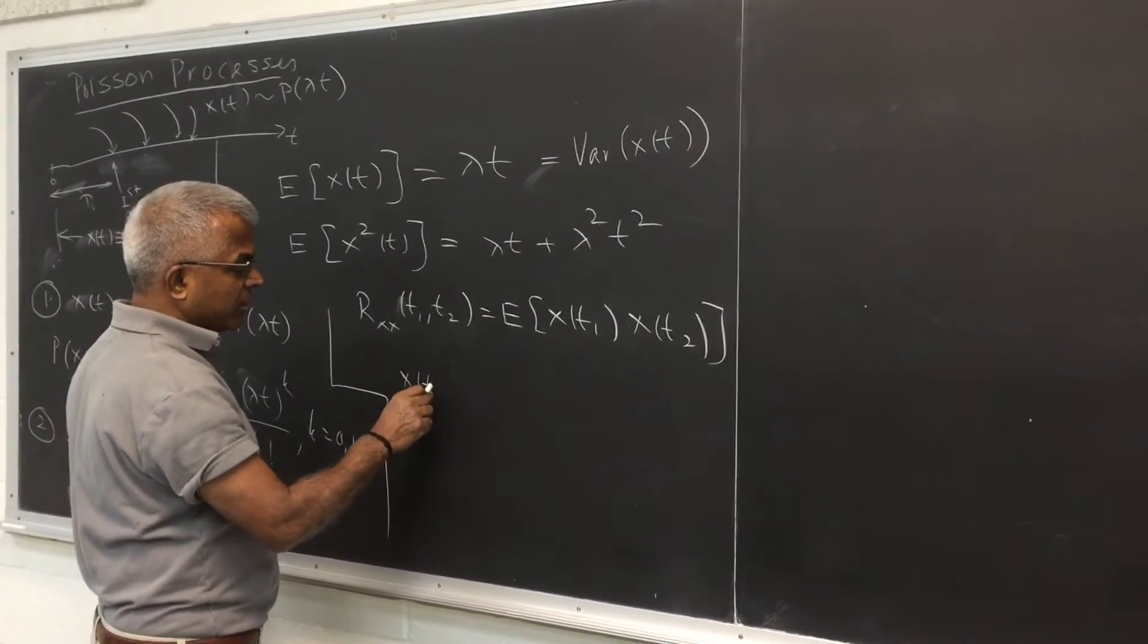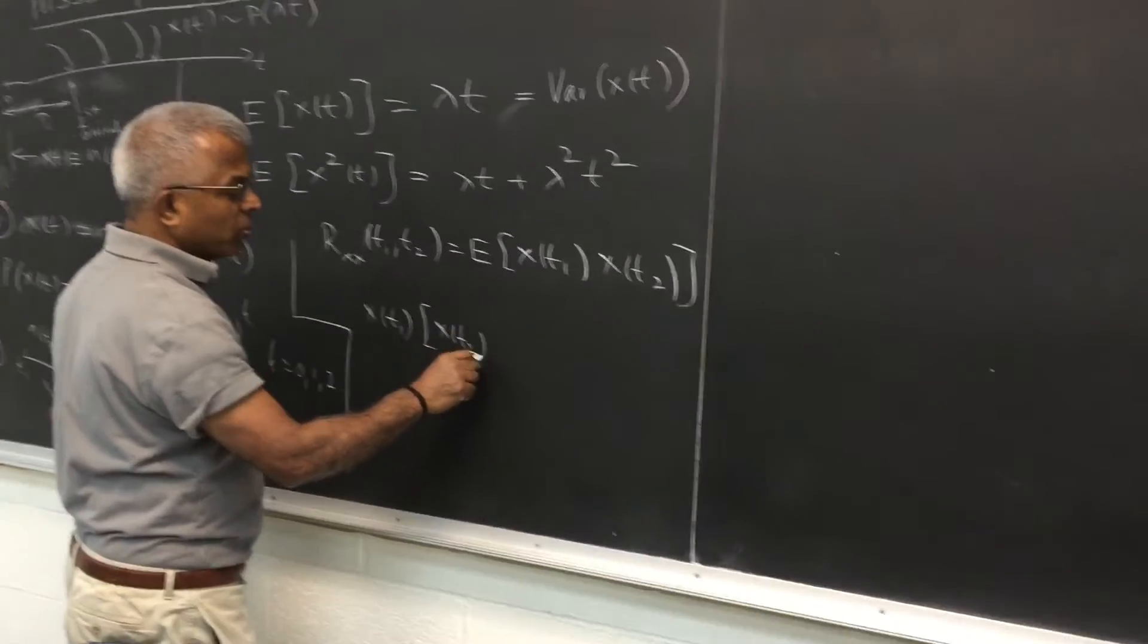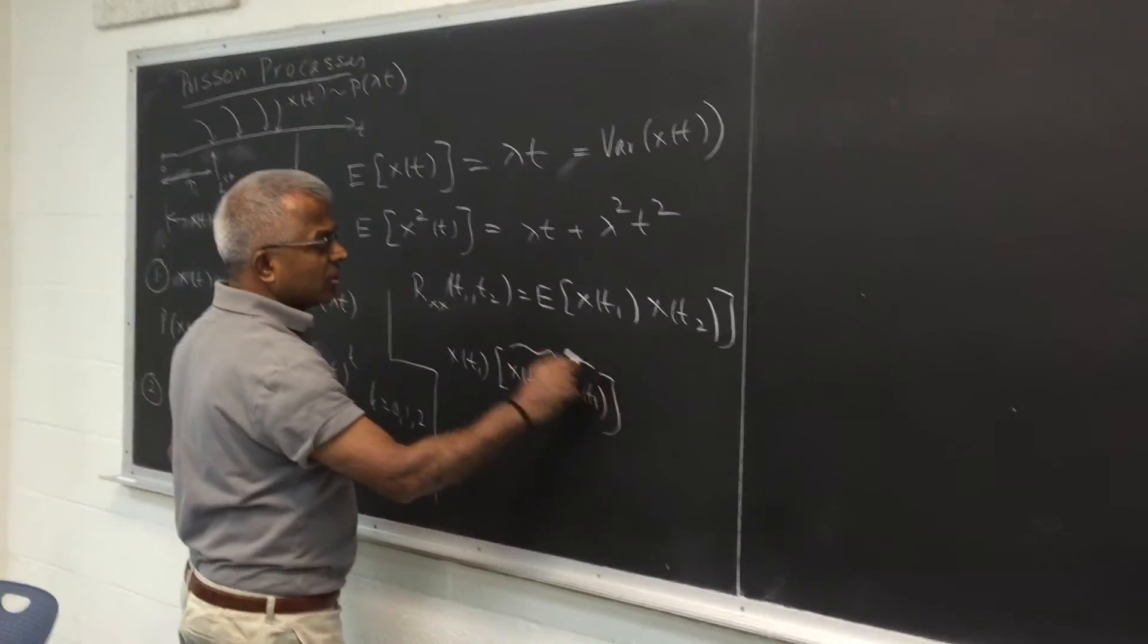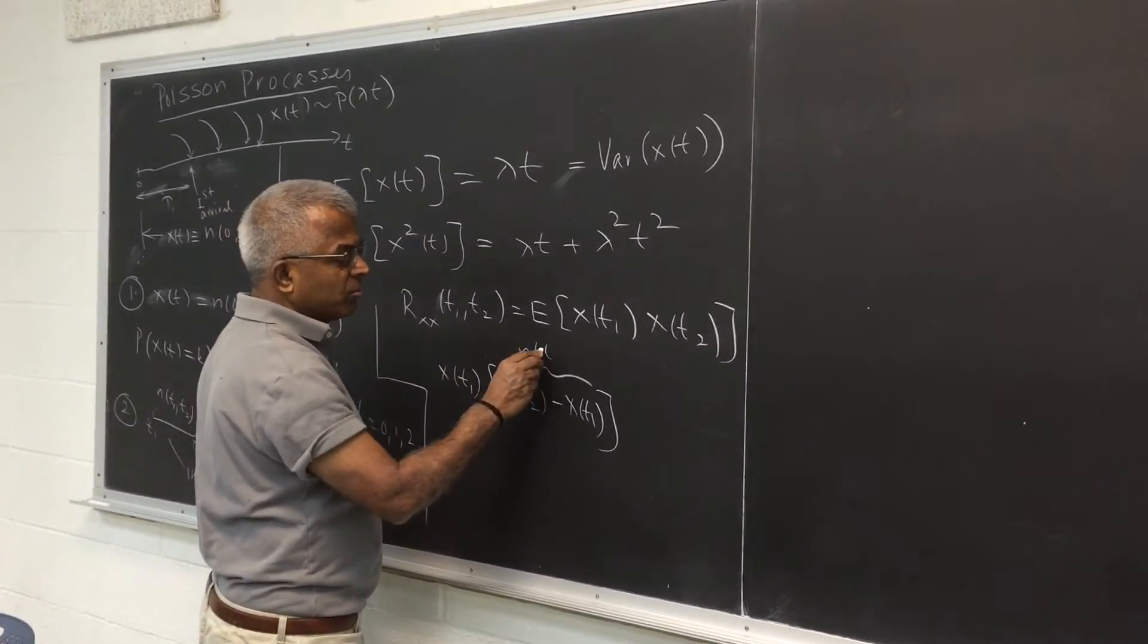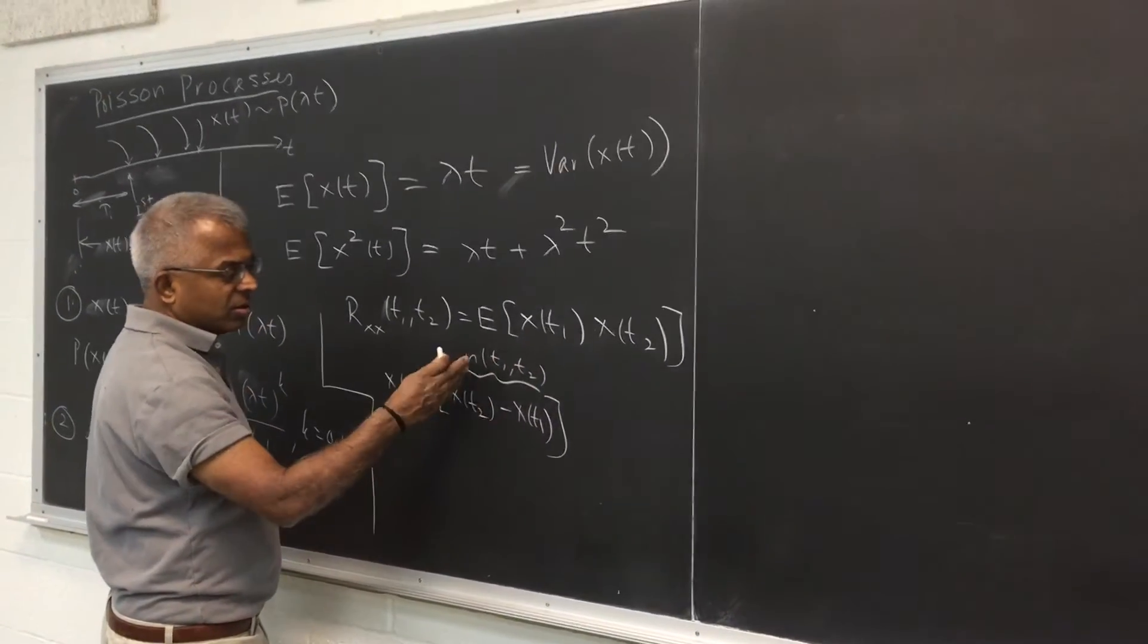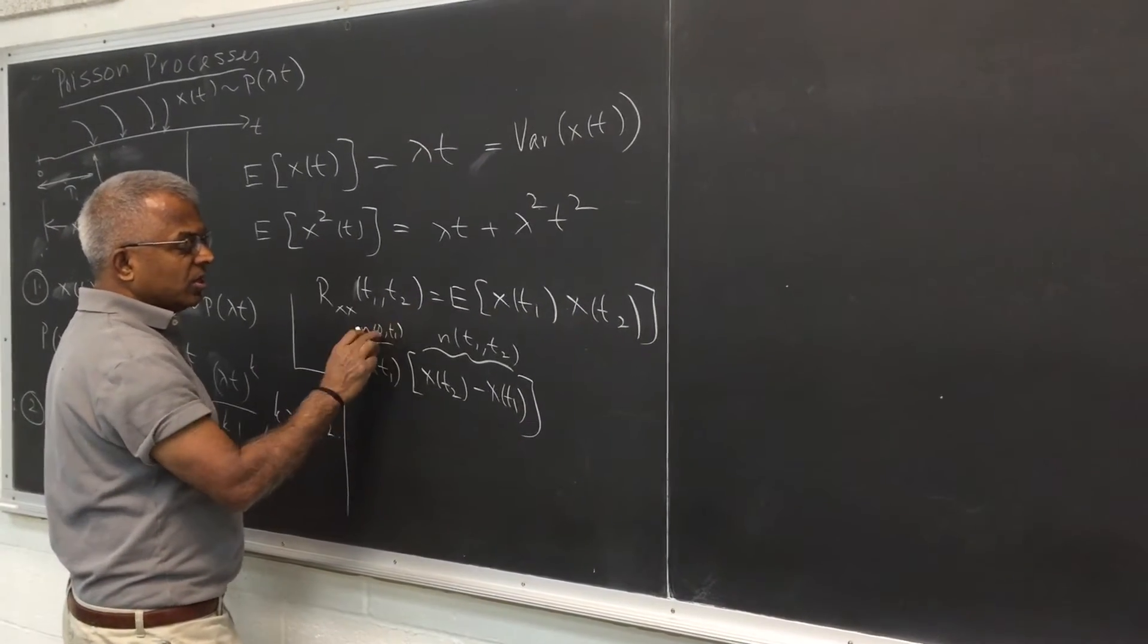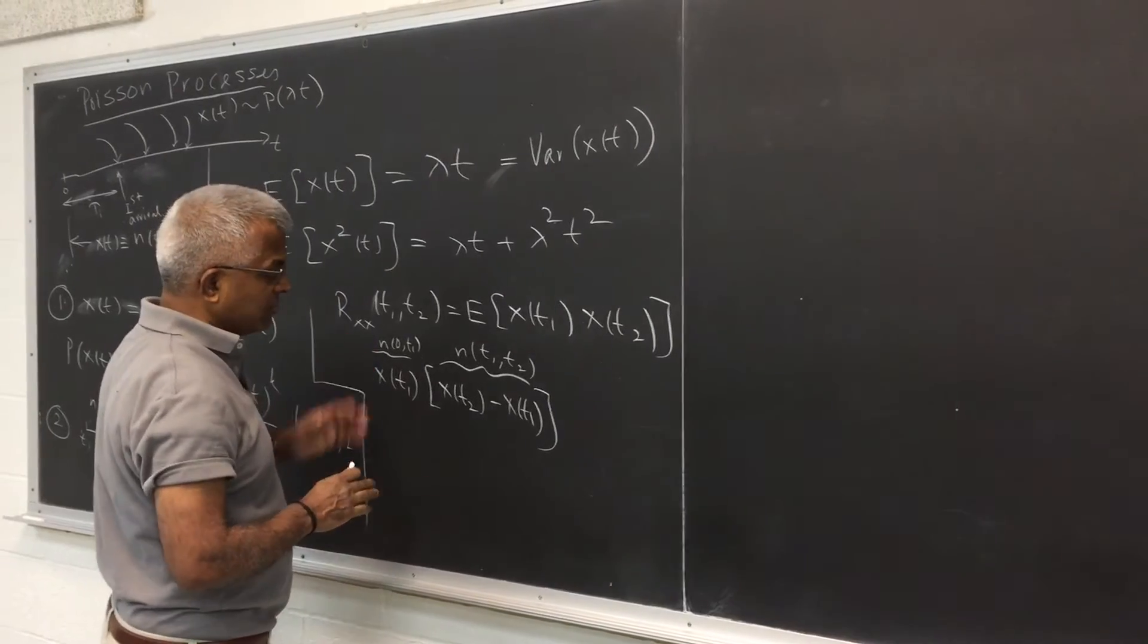So if you look at this product, I am going to arrange two random variables that are independent. This is of course the number of - so long as I don't count the edge on both of them, this is the events in the interval t1 to t2, let's say this is an open interval. This is the number of events in 0 to t1. So these intervals being non-overlapping, t1 only being counted on one of them.